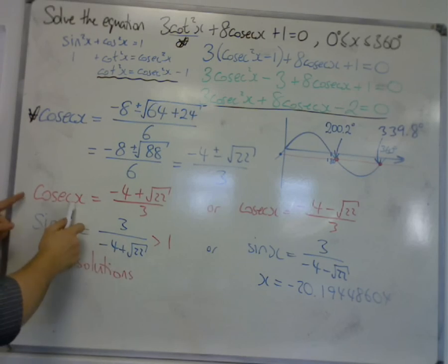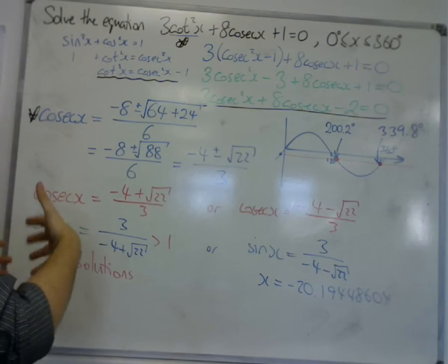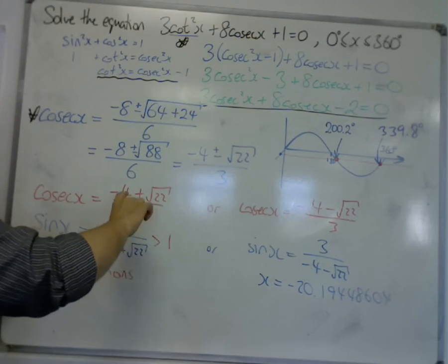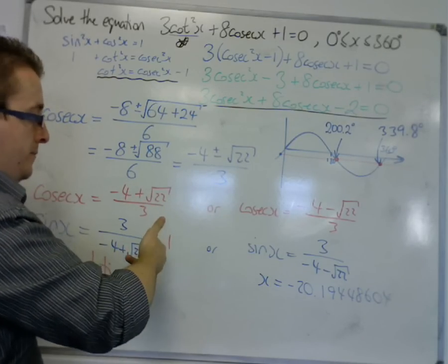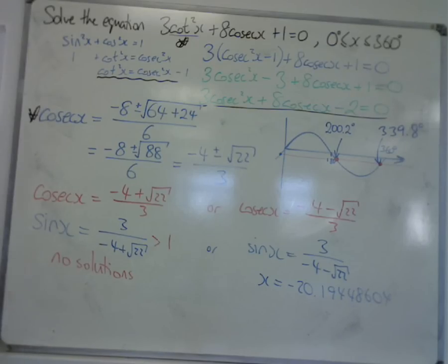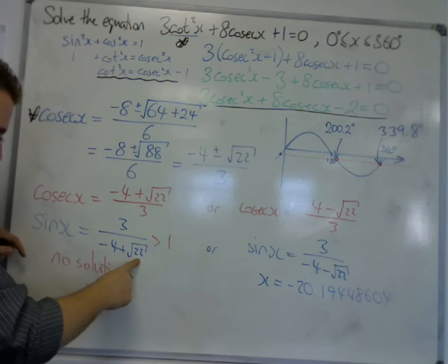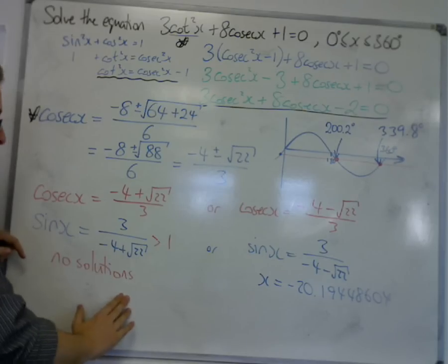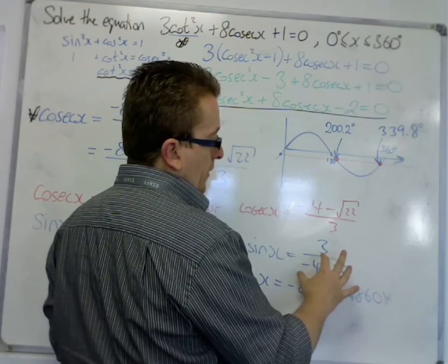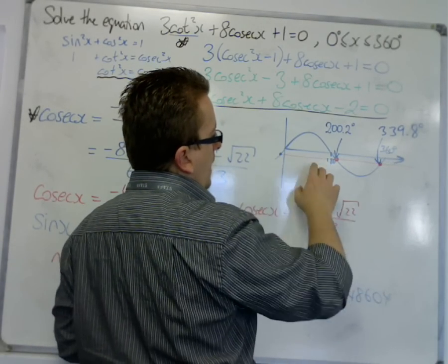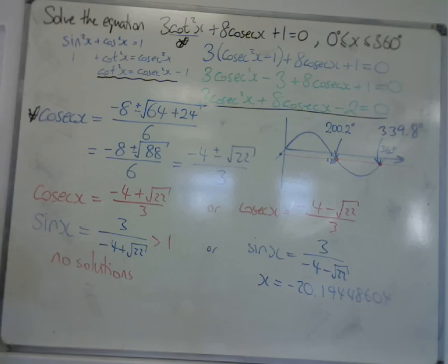That meant that cosec was either the plus or the negative of those. Now if you get cosec equals something, then sine is equal to 1 over that. So that flips the fraction upside down. In this case, this gives you something that is greater than 1, so there are no solutions in solving this equation. However, this gave us something that was less than 1 and greater than -1, which is about -0.3 something.